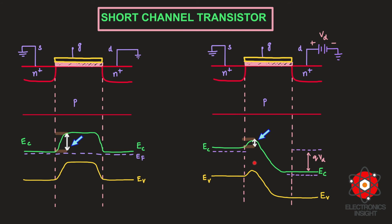In a long channel transistor, increasing VD from VD1 to VD2 only extended the conduction bands downward at the drain side. But in the short channel transistor, because the channel length is small and source and drain are closer, the drain potential influences the source-side barrier. This is why it is called drain induced barrier lowering — the drain induces bending of the conduction bands, which also lowers the barrier at the source side.